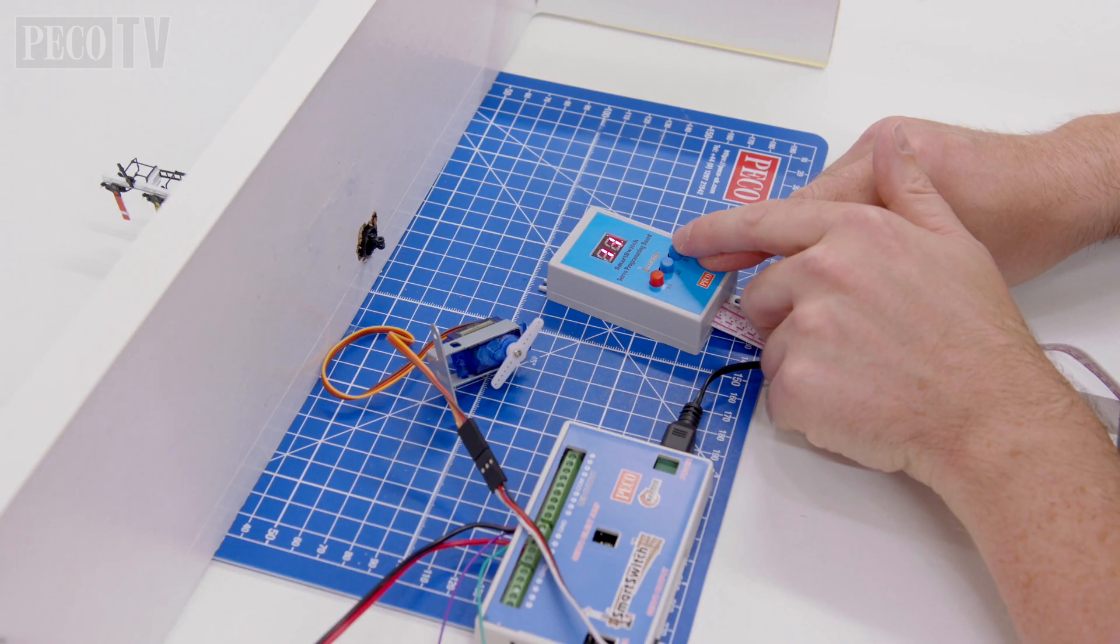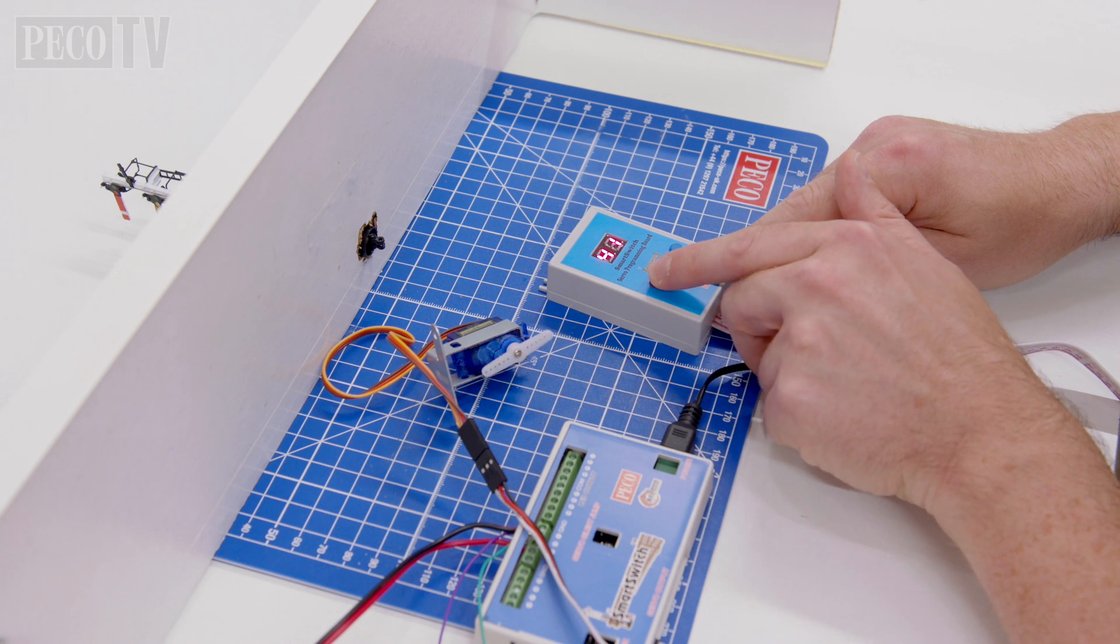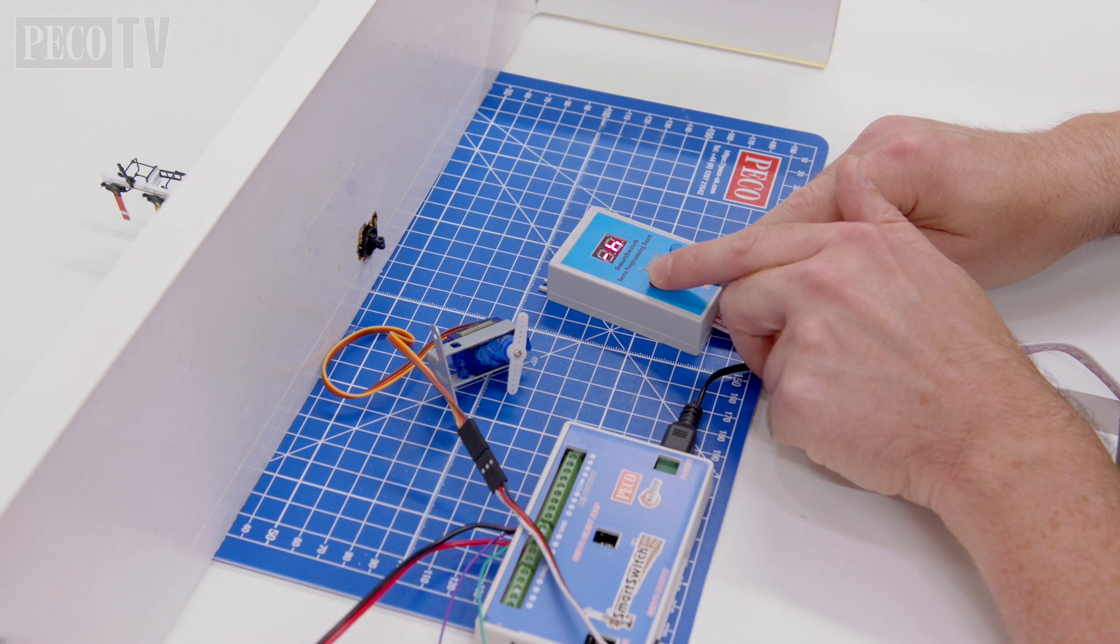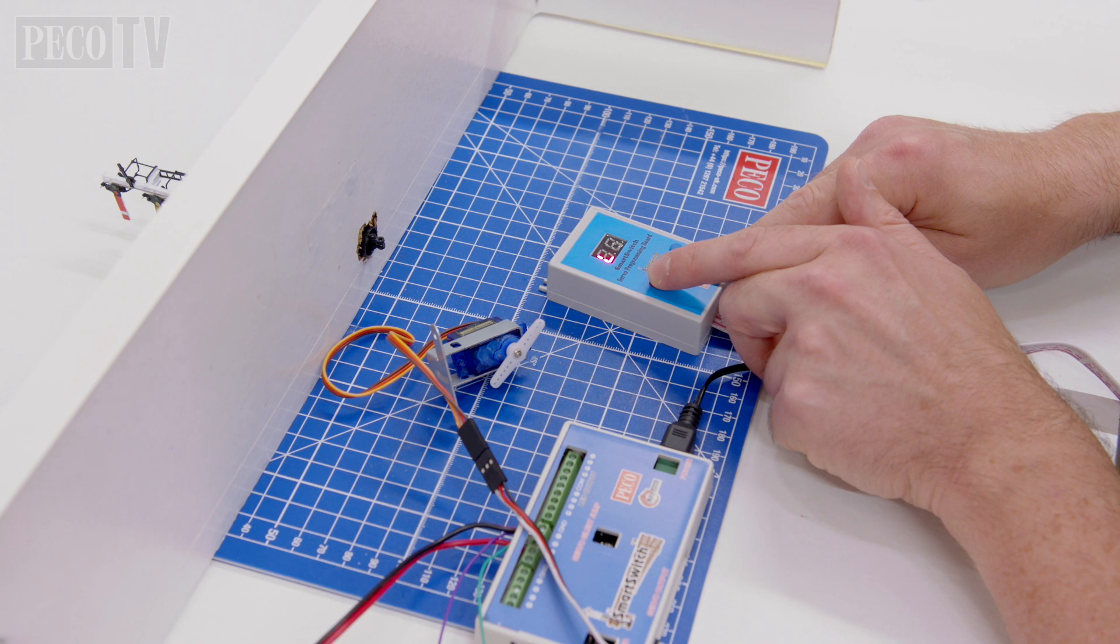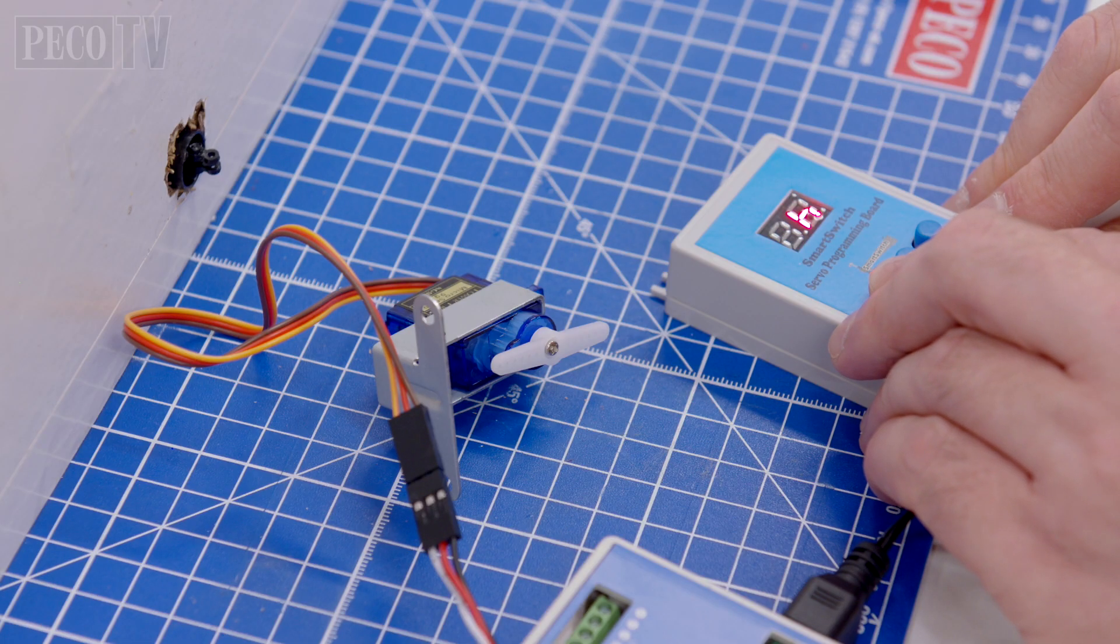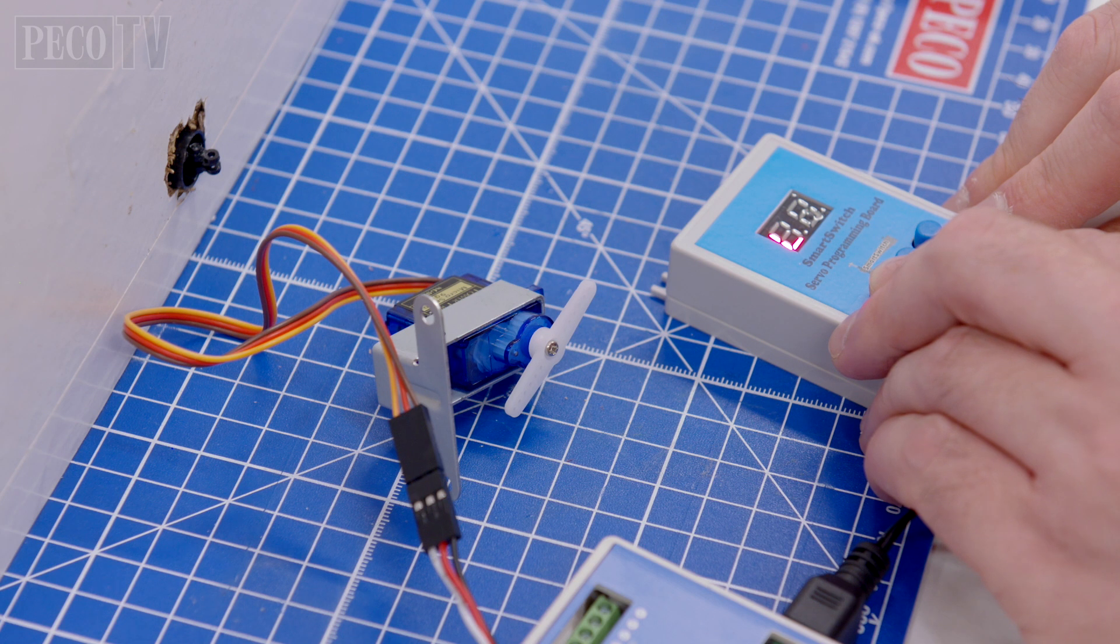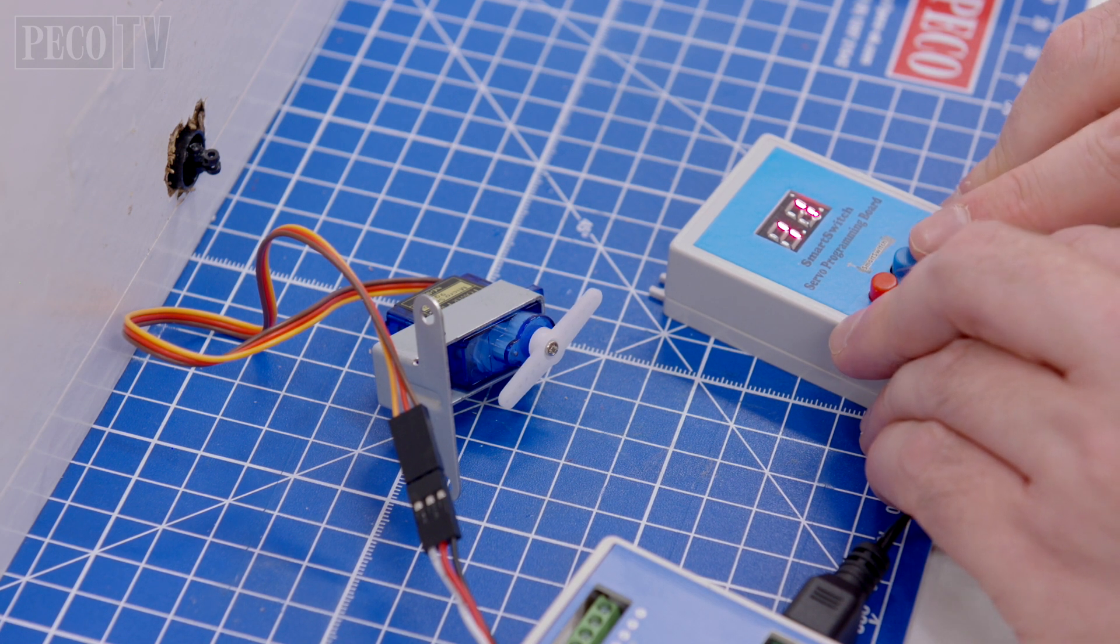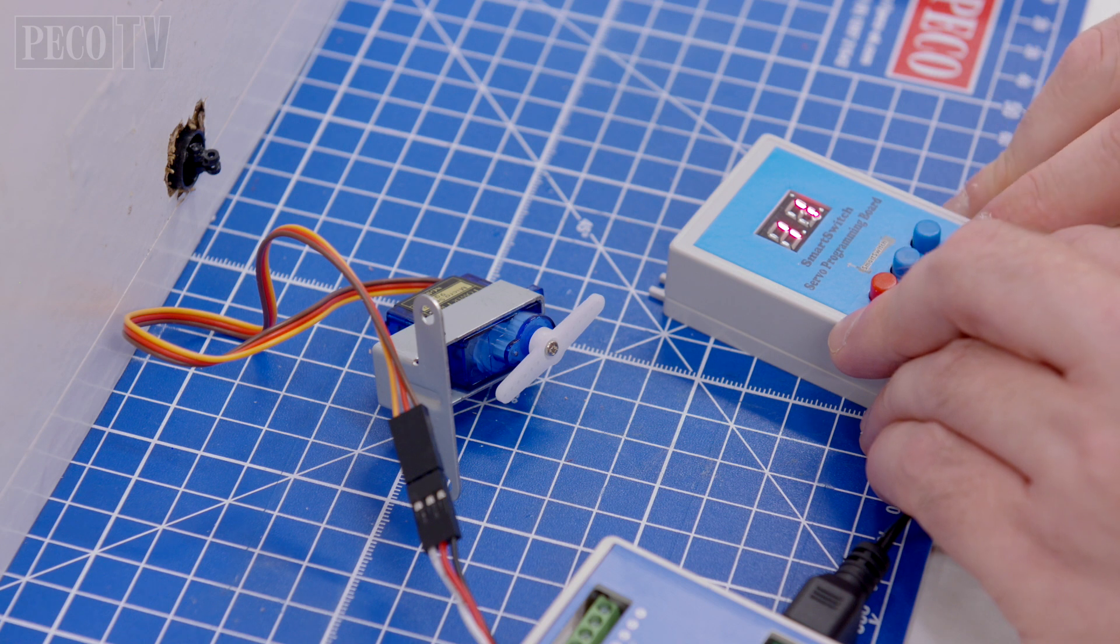Now this is a really important note. The servo must be programmed with minimal movement prior to linking the signal. Failure to do so will damage the signal as the motion on the first activation will move quickly and over a greater distance than the capability of the signal. Full instructions on how to program your smart switch can be found in the smart switch instruction manual provided in the box and also available as a download from our website.